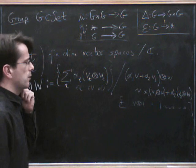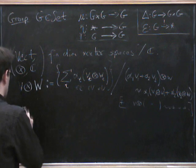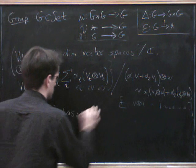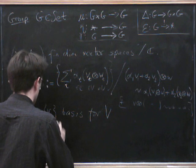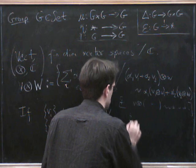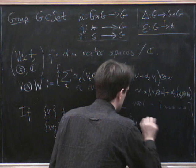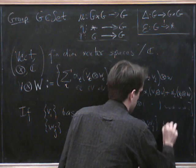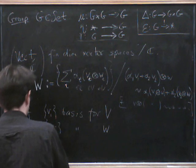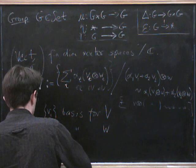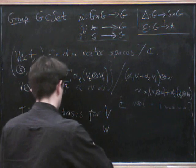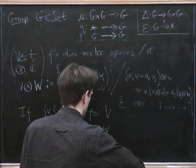Now what you can kind of see very quickly is how to get a basis of V tensor W. So suppose we had a basis v_i for V, and let's say w_j is a basis for W, then v_i tensor w_j is a basis for V tensor W. You can quite easily see from the definition there, a couple of lines of calculation is the basis for V tensor W.